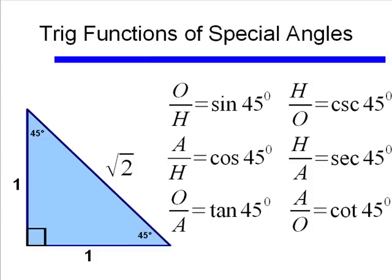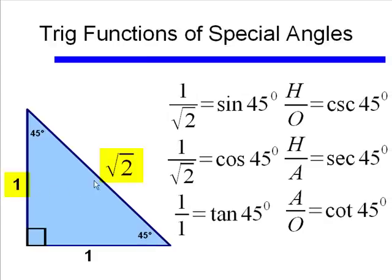45 degrees is a little bit easier, because it doesn't really matter which 45 degree angle you look at. For either 45 degree angle, the opposite will be 1 and the adjacent will also be length 1. The sine of 45 degrees is opposite over hypotenuse, or 1 over square root of 2. The cosine of 45 degrees is also 1 over square root of 2. And the tangent of 45 degrees is opposite over adjacent, or 1 over 1, which is simply 1.